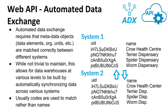Let us quickly discuss the concept of automated data exchange. In DHIS2, automated data exchange requires that metadata objects are matched correctly between different systems. This includes data elements, organization units, and other object types. While this might not be trivial to maintain, it allows you to build a data warehouse at various levels by automatically synchronizing items across systems. Typically, rather than matching names, you will use some type of code to match objects across the different systems.